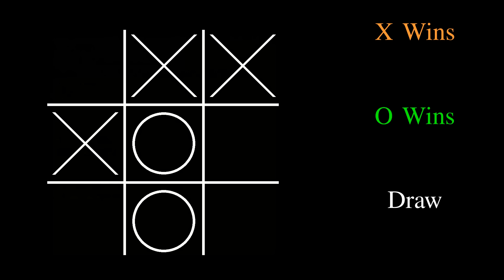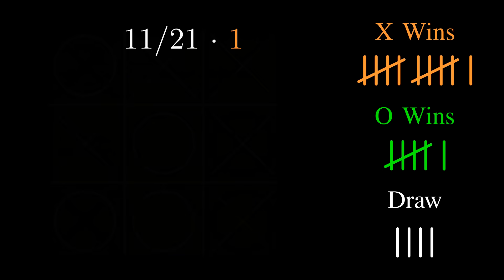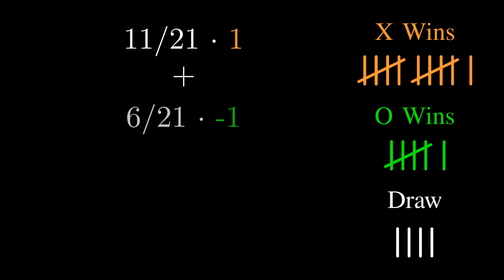Take this board position, for example, with four moves left to go. There are 21 different possible ways that this game can play out. 11 of them are victories for X which have a score of 1, 6 of them are victories for O which have a score of negative 1, and four of them are draws which have a score of 0.